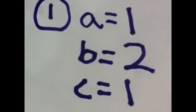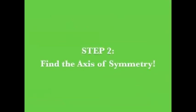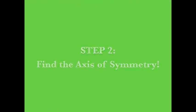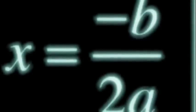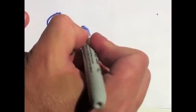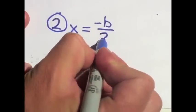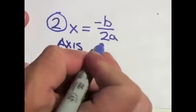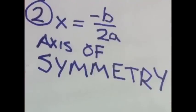First step, done. Next, we need to find the axis of symmetry. The axis of symmetry is the invisible line that separates two identical or symmetrical sides. The formula to find the axis of symmetry is x equals negative b over 2a. So for step two, I'm going to write it again: x equals negative b over 2a. This is our axis of symmetry — don't forget it.